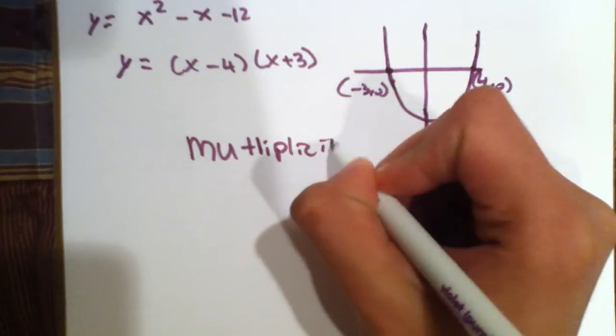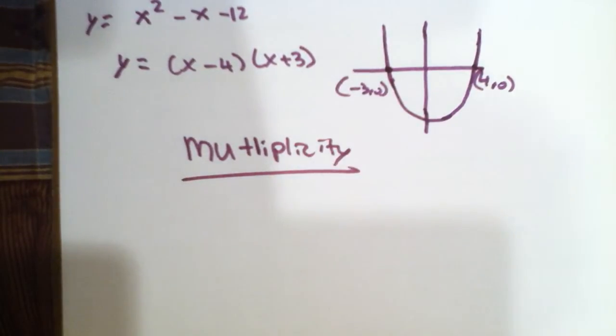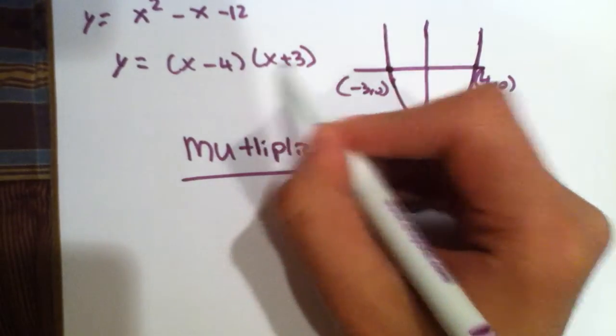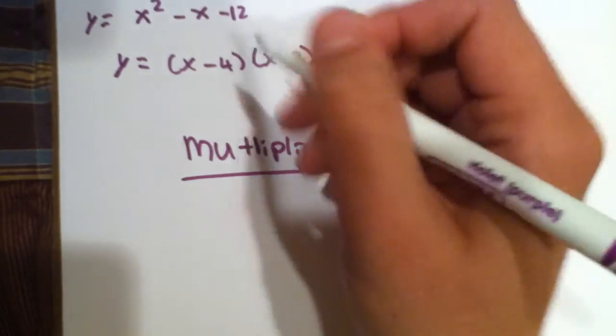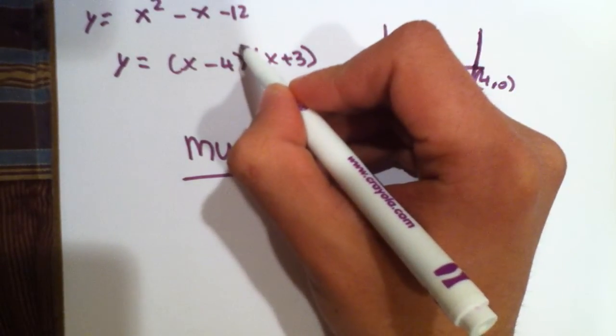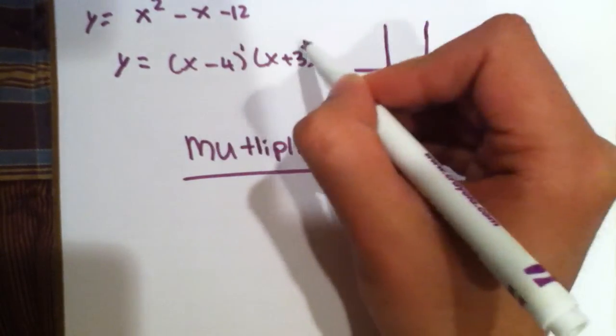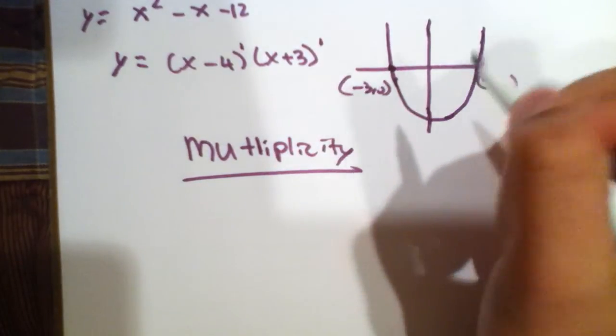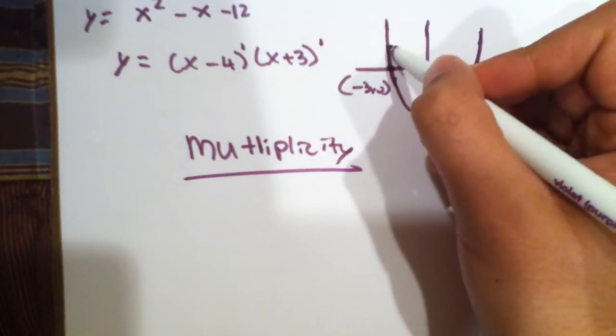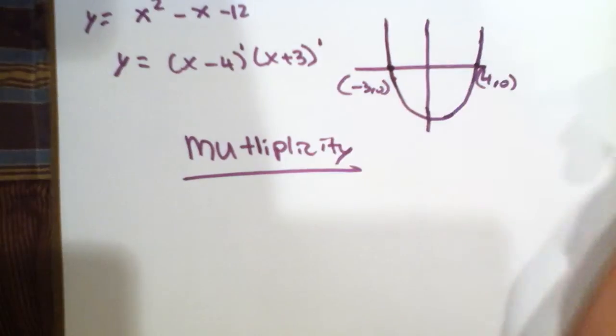Let's see, multiplicity. The multiplicity here for both of these is odd. What do I mean by this? Well, the exponent on the top of each of the expressions is 1, and 1 can be considered an odd number, and it will therefore go through. However, if we had the equation y is equal to, let's say...